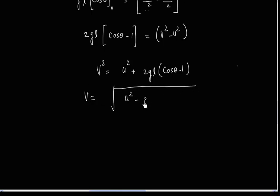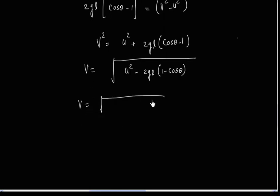Let us take negative sign out. So we will have minus 2gl times 1 minus cos theta. This is the final value for v.